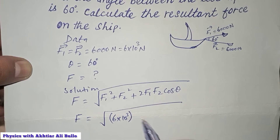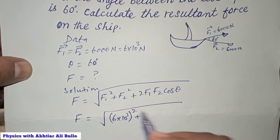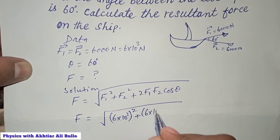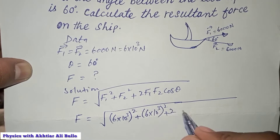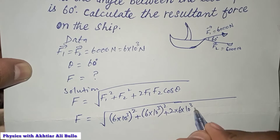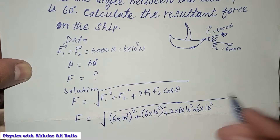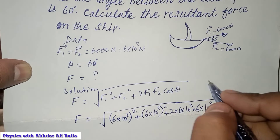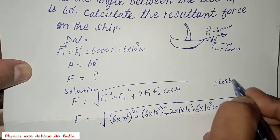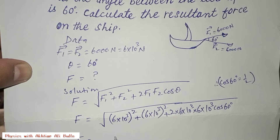F2 is also 6 × 10³, so (6 × 10³)² appears again, and the angle is 60 degrees. We multiply by cos(60°). As we know, the value of cos(60°) is 1/2, so F will be equal to the square root of these terms.